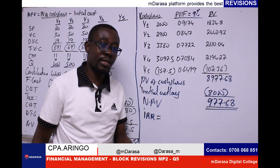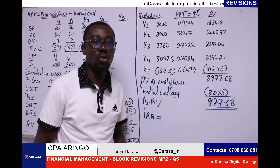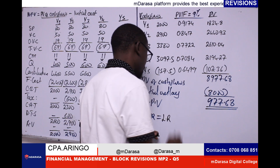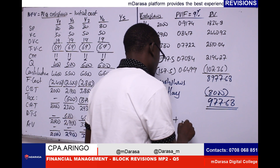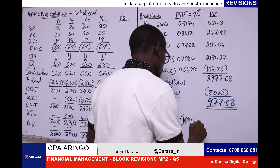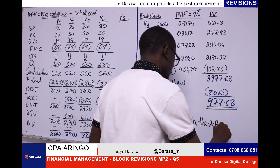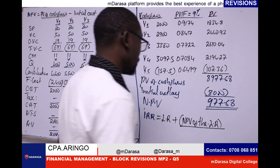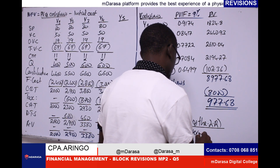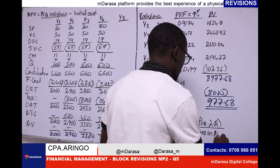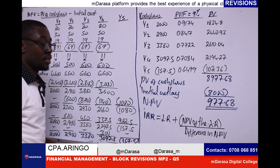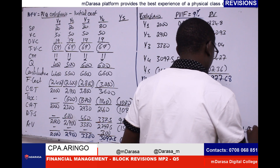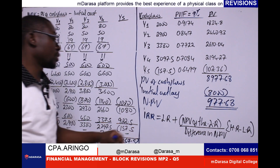Mwalimu guided us that you should not struggle too much. The best way to determine your IRR is: take the lower rate, plus the NPV of the lower rate, divide all this by the difference in our NPV, and multiply by the higher rate minus the lower rate. This is the best way to always determine your IRR.